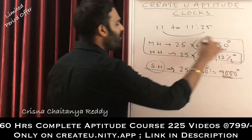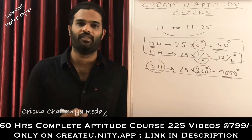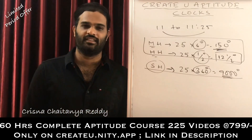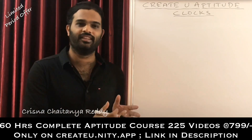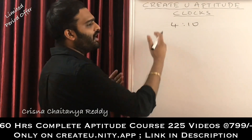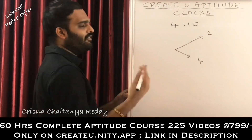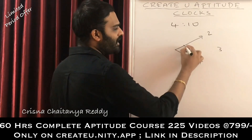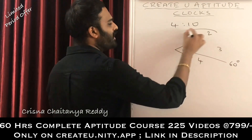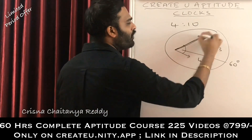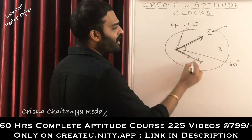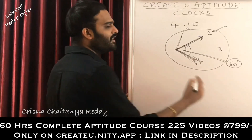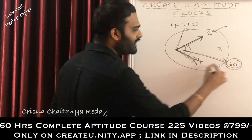Your questions will mainly be on the minutes hand and hour hand. The key information is: minutes hand = 6 degrees per minute, hour hand = 0.5 degrees per minute, number-to-number gap = 30 degrees. Now, why do we go wrong at 4:10? The minute hand is on 2 — fine. But at 4 o'clock the hour hand was exactly on 4; by 4:10 it has moved a little towards 5. So the hour hand is not exactly on 4 at 4:10, which is why the answer can't be 60 degrees.